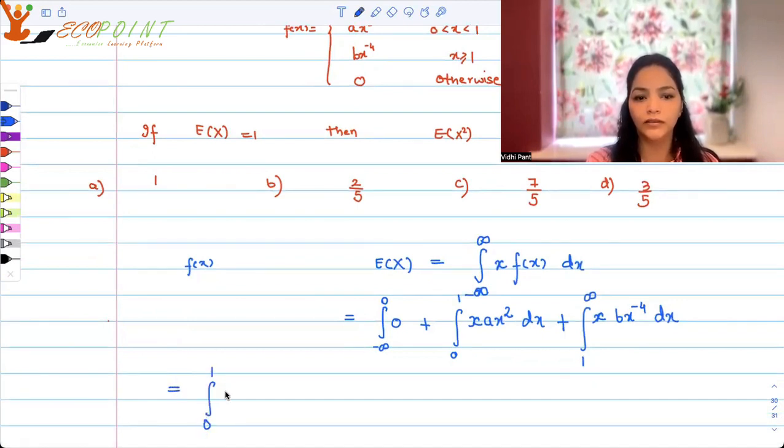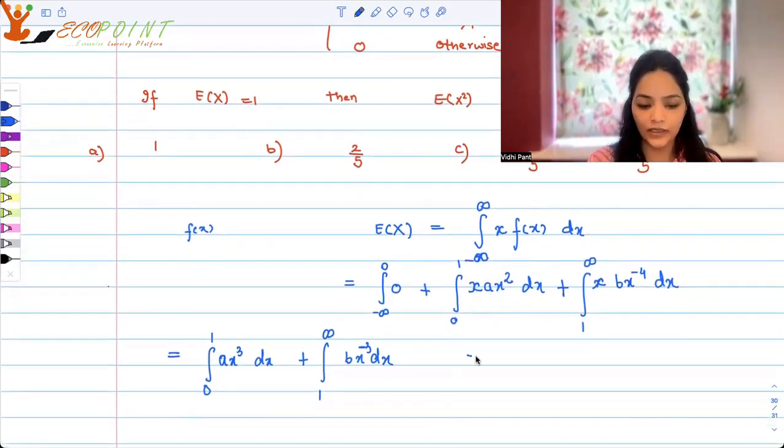Expected value will be the sum of these integrals. So from 0 to 1, a x cubed dx plus from 1 to infinity, b x to the power minus 3 dx. And that is equal to 1. With b, you will have minus 3 because it's minus 4 into x. This is equal to 1.